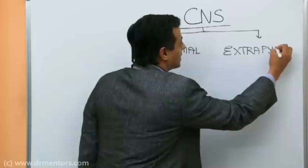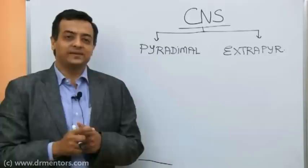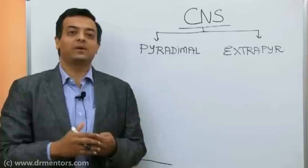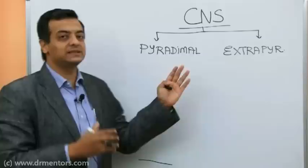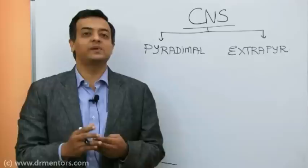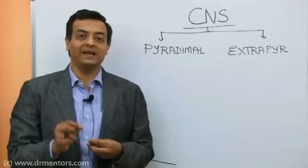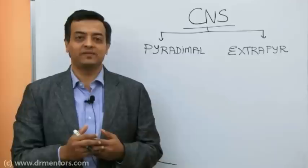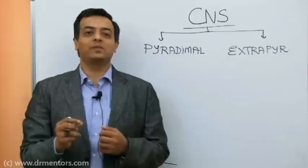Whenever we classify any topic, we need to know two things: the basis of the classification and the need for the classification. Anatomically and functionally they are different areas, but a human brain remembers knowledge that is useful to it. So we need to understand why we classify CNS disorders.